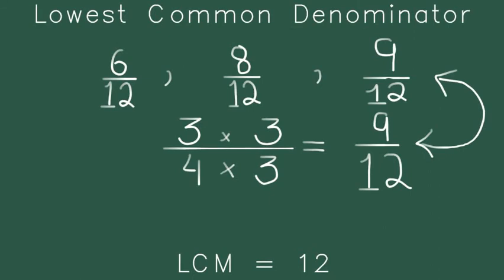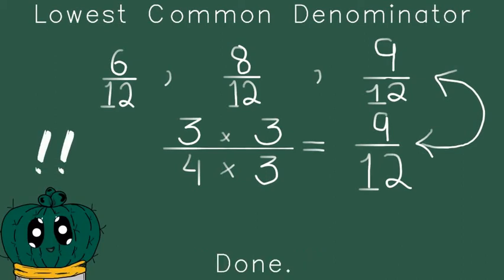And now you can actually see that all the bases are in 12. All the bases are in 12. You can add them, you can subtract them. For example, I want to add them. I can add them.